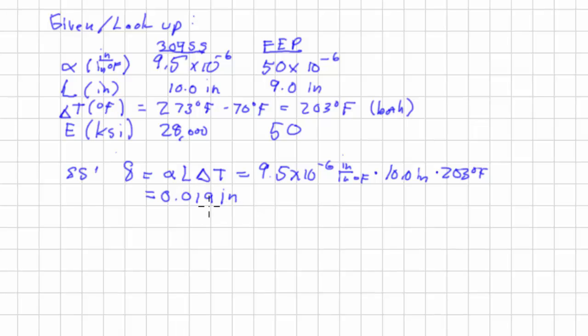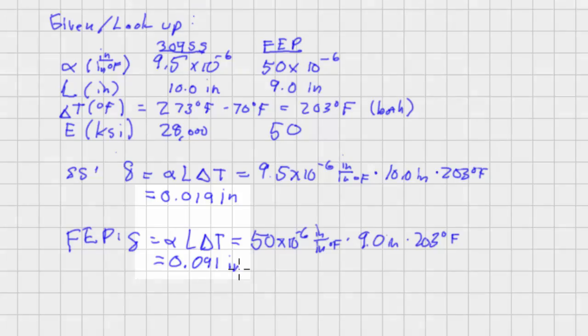For the FEP, our deflection is going to use the same formula, just different numbers. So the FEP has a coefficient of thermal expansion of 50 times 10 to the negative 6th inches per inch degree Fahrenheit times 9.0 inches times 203 degrees Fahrenheit, and that will have it expand 0.091 inches. So you can see this is a much larger deflection than this because of the coefficient of thermal expansion.